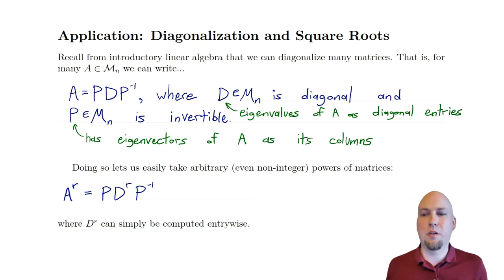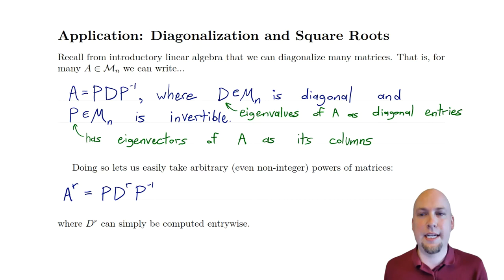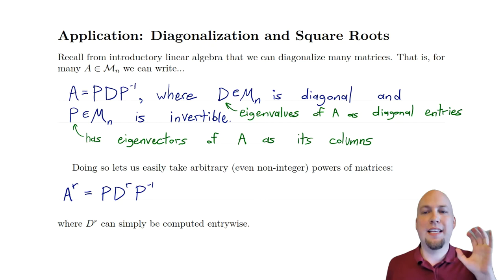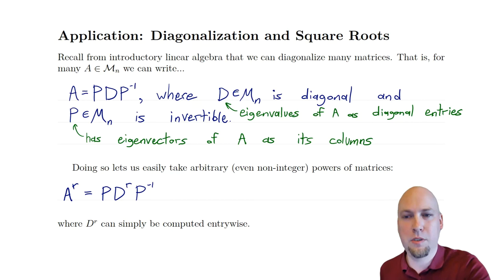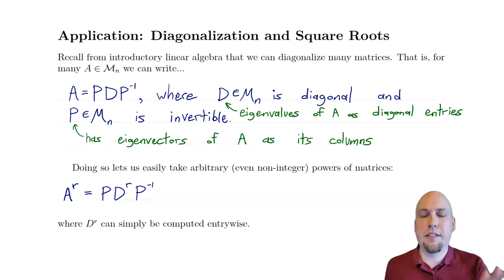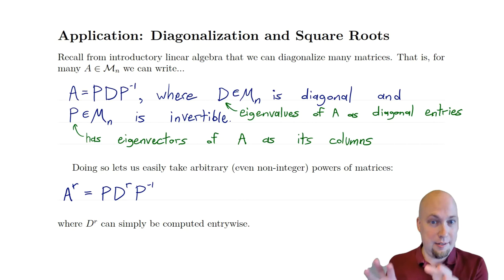All right, so let's see how this works. We're going to start off with a brief reminder of things we learned in the previous course: how to diagonalize a matrix and take non-integer powers of a matrix once you have that diagonalization. So here's the setup. Suppose you've got some square matrix. We say that matrix can be diagonalized if you can write it as P times D times P inverse, where D has to be diagonal and P has to be invertible. P has to be invertible for P inverse to even exist. We have a theorem from the previous linear algebra course that tells us exactly when you can do this and how to do it.